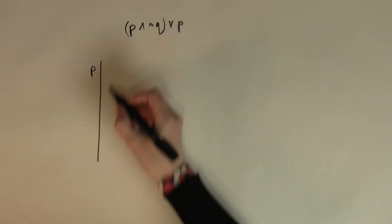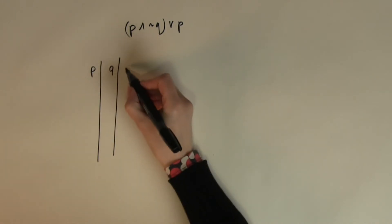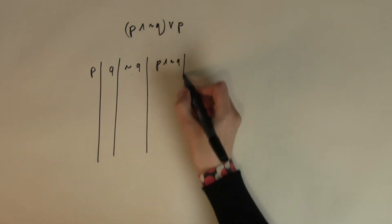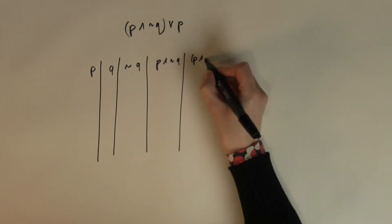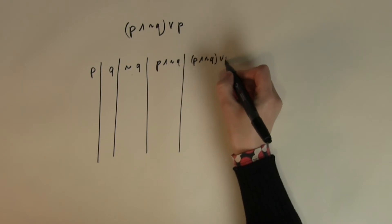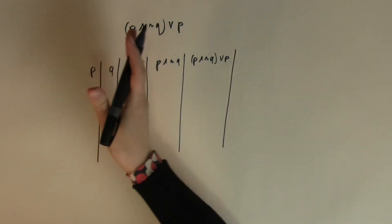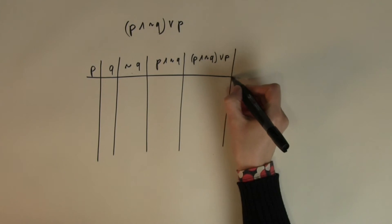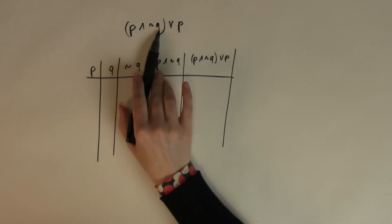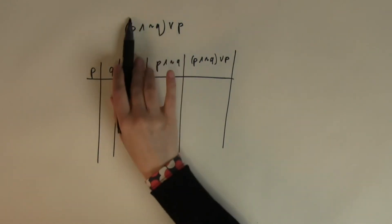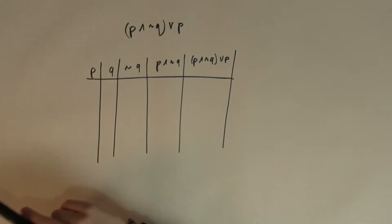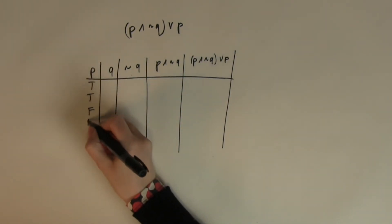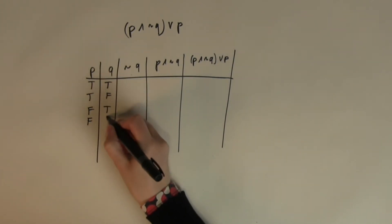So the columns I need are: p, q, NOT q, p AND NOT q, and finally (p AND NOT q) OR p. These are the different values I need to calculate before arriving at the final answer. I only have two different letters in my expression, p and q, so I'll use two-input combinations. The truth values to start with are: p = true, true, false, false and q = true, false, true, false.